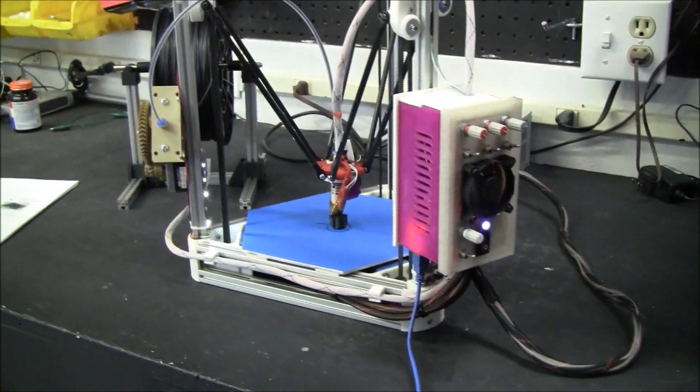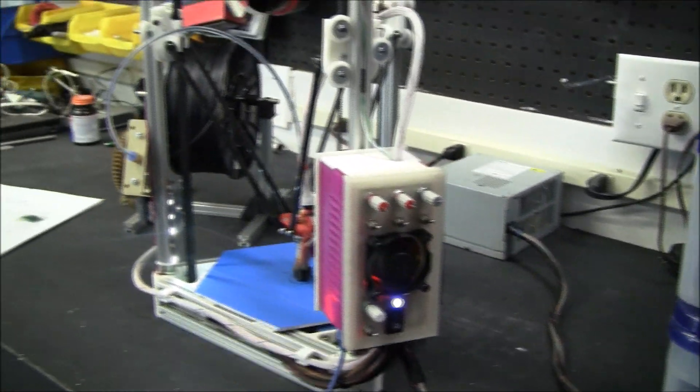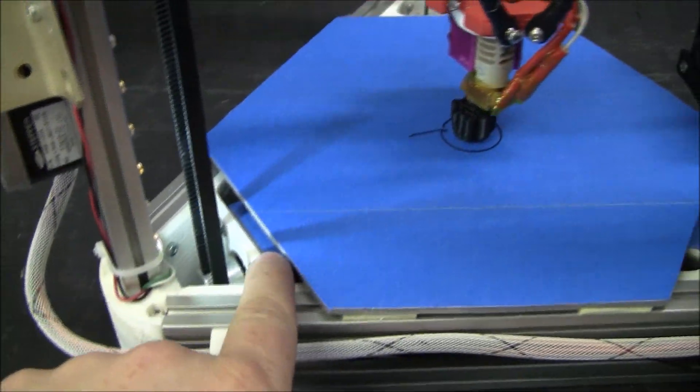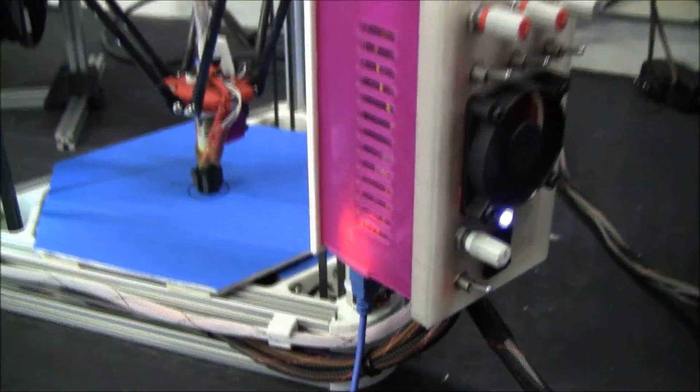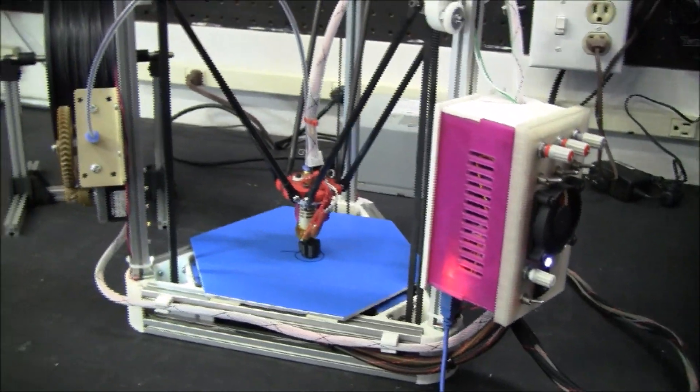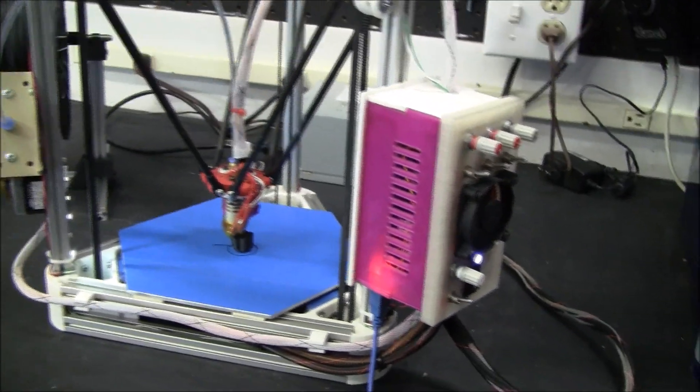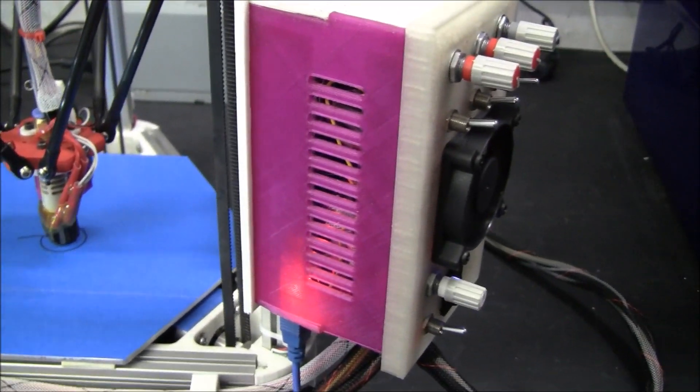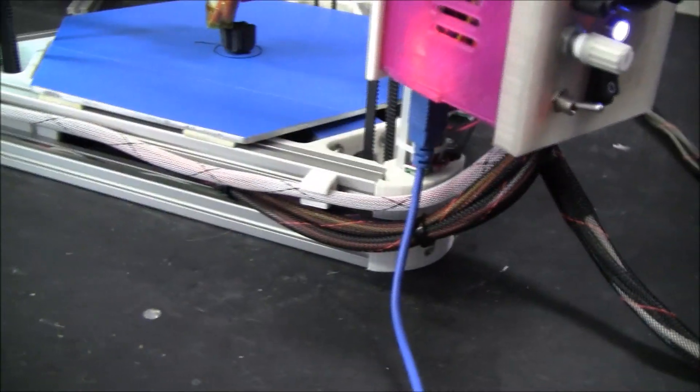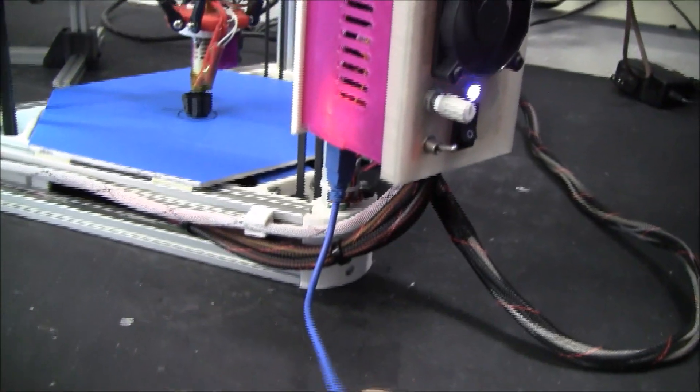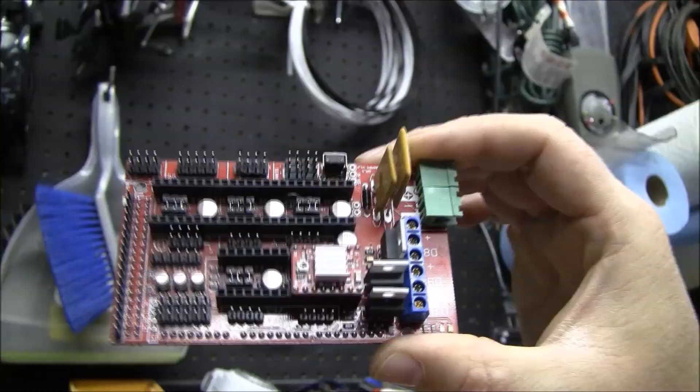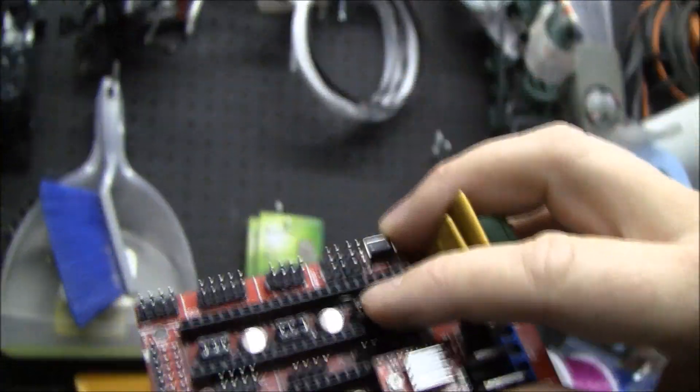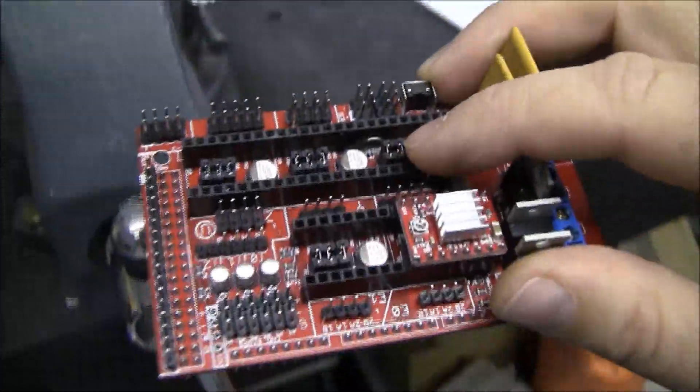And the problem with that is there's a lot of harmonic distortion and spikes coming in from these stepper motors and the heaters. And I just had bad luck with that. The board would lock, the Arduino would lock up, and so forth. So when you take that diode out, the Arduino board is powered from the USB. So I want you to notice that there's a little diode in here.